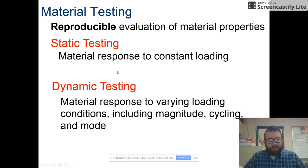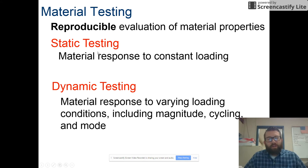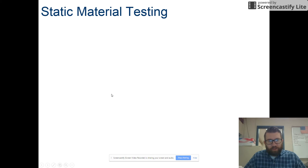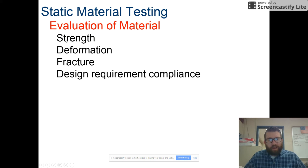For example, static testing asks: what happens to the material if I put a 5,000-pound load on it? Dynamic testing asks what happens when loading varies — say from 5,000 to 10,000 or even 100,000 pounds. We're focused on static material testing, looking at strength and deformation — meaning how much does it bend or change given a load.